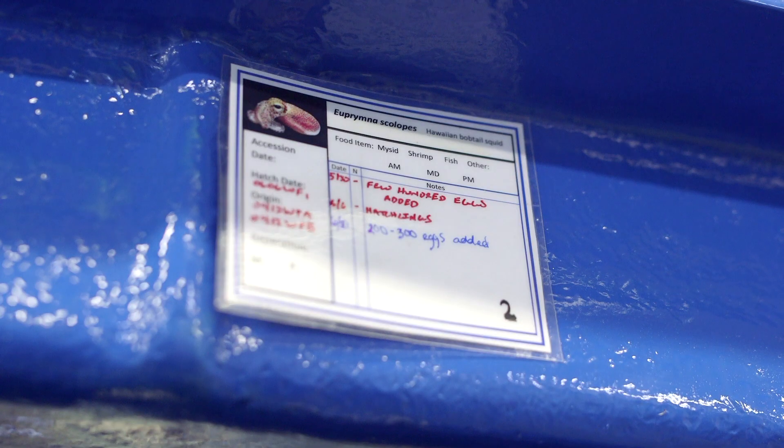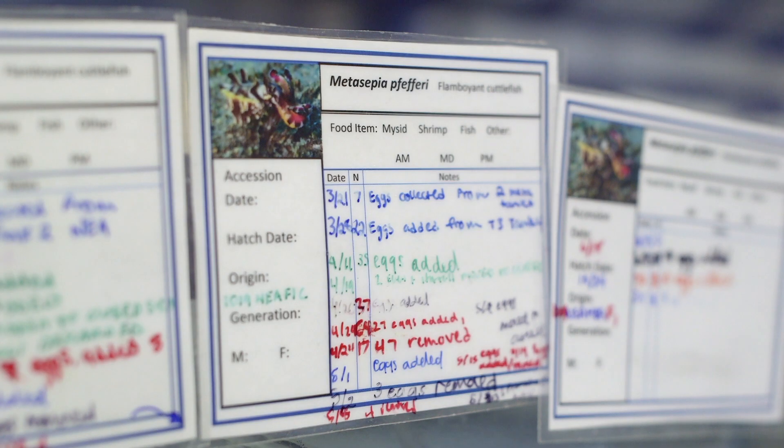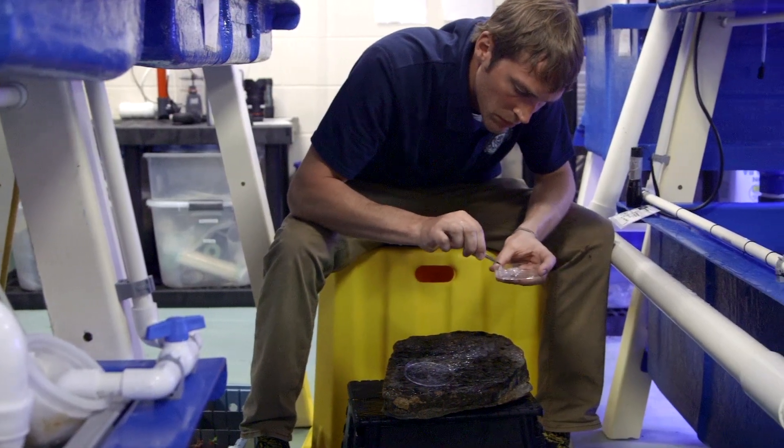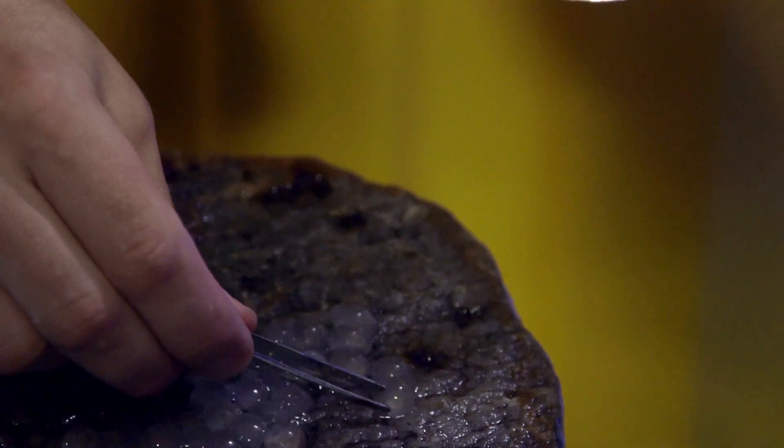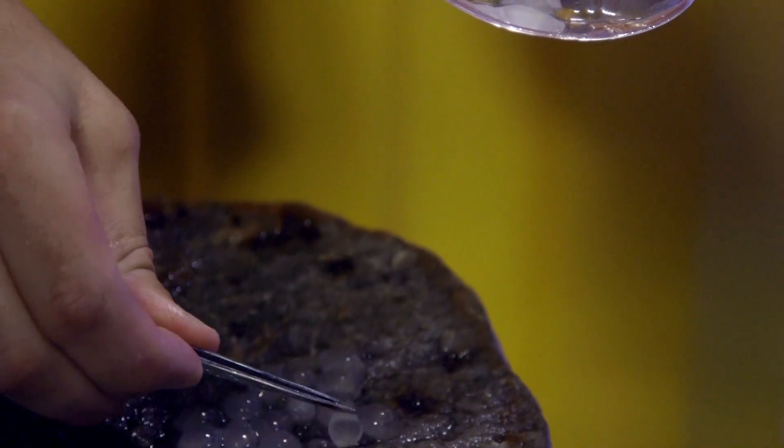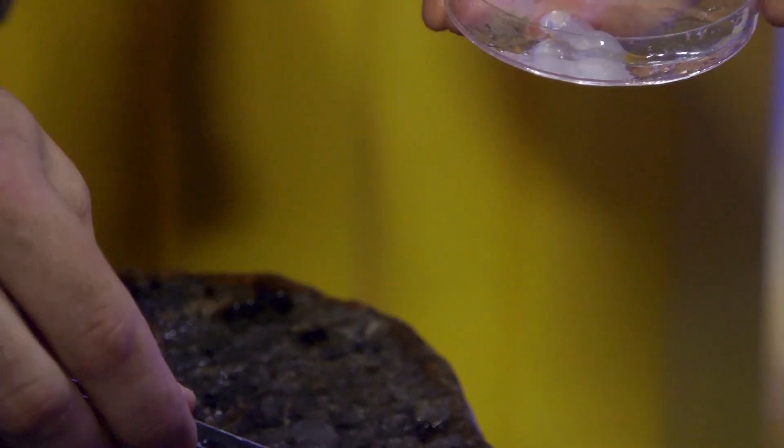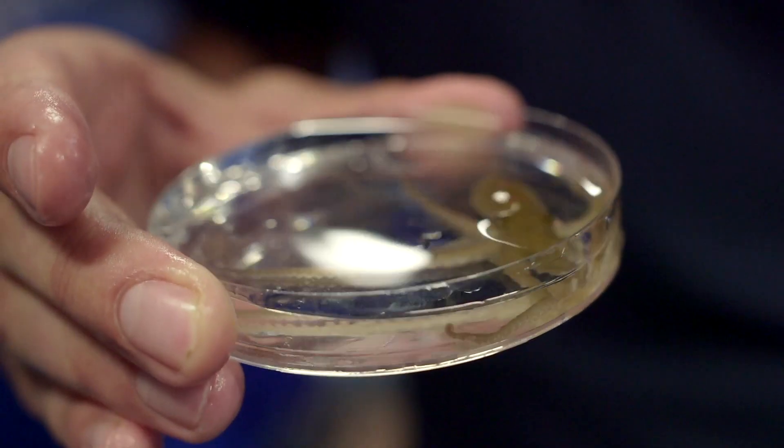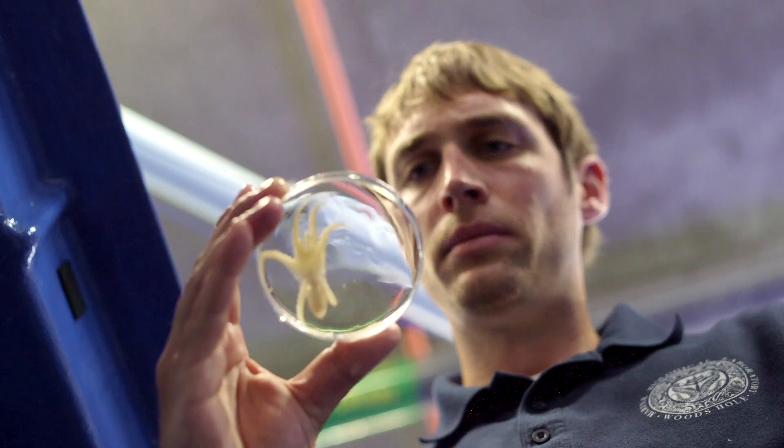We've got eight to ten species at any given week that we're culturing through multiple generations, and we're able to support the larger research community with thousands of these animals that we're producing. What we're doing is creating a sustainable breeding program where we're culturing them from egg to adult and then back to egg again. We're the only research lab of its kind that is culturing and breeding this many species to this extent for these purposes.